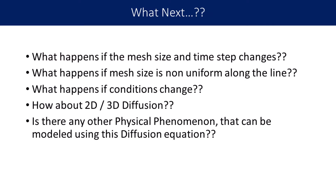If you have tried this and got it right, then what next? You can think about: What happens if the mesh size and time step change — we took a mesh size of 0.1 and time step of 1 second, will we always get better results? What if the mesh size is non-uniform along the line? What if both ends are at different temperatures, such as one at 100 and another at 200 degrees Celsius? How about 2D and 3D diffusion — can we solve those in a similar manner? And can you identify any other physical phenomenon modeled by the diffusion equation? Think about them. That's all for now. Bye.